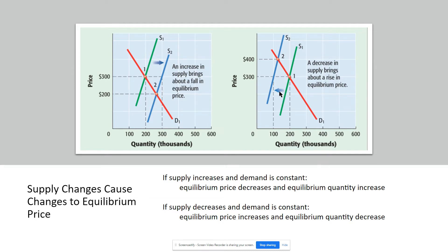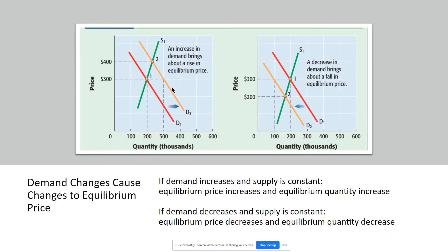It can be reversed as well. Maybe taxes have increased, so we've gone from S1 and D1 at $300 — and now because of taxation, $400 is the new equilibrium price. Remember, wherever supply and demand intersect, that's equilibrium. In this case, the change in equilibrium has nothing to do with price itself — it has to do with the supply curve shifting left or right, or the demand curve shifting left or right, and that's what results in a change in price.